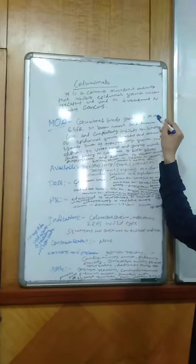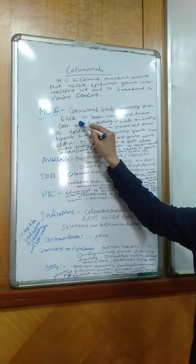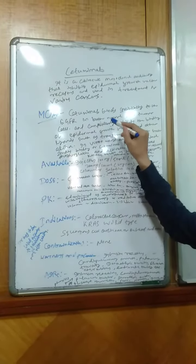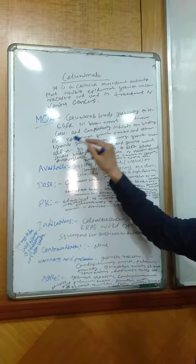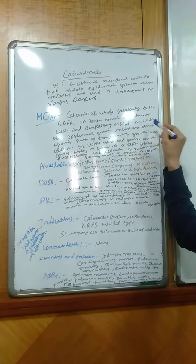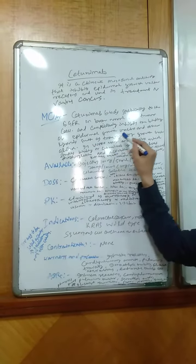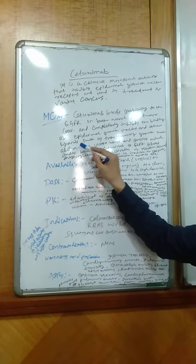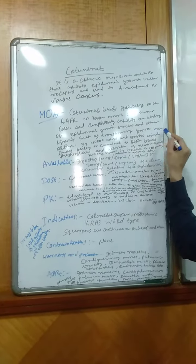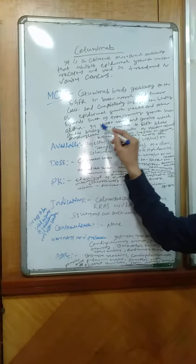Cetuximab binds specifically to the epidermal growth factor receptor, that is EGFR, on both normal and tumor cells and competitively inhibits the binding of epidermal growth factors and other ligands such as transforming growth factor alpha.